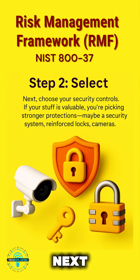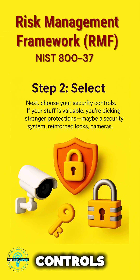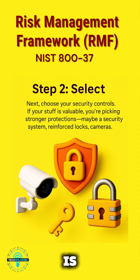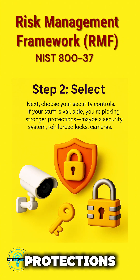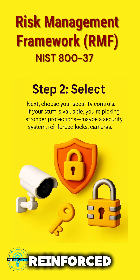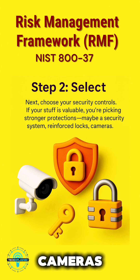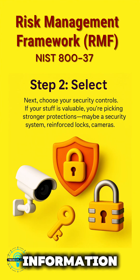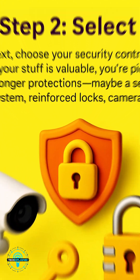Step two: Select. Next, choose your security controls. If your stuff is valuable, you're picking stronger protections — maybe a security system, reinforced locks, cameras. Same goes for information systems; you select controls based on the risk level.